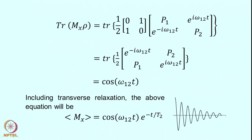The trace is the sum of the diagonal elements. Adding those terms with the factor of one-half gives: (e to the i·omega-12·t plus e to the minus i·omega-12·t) divided by 2, which is cosine(omega-12·t). Therefore what I measure is the time dependence of this coherence. Including transverse relaxation, the transverse magnetization must be multiplied by e to the minus t/T2, where T2 is the transverse relaxation time. Plotting this gives the FID — the free induction decay. So if I create a density operator with a non-zero off-diagonal element, it reflects itself in the measurement of magnetization as the FID.